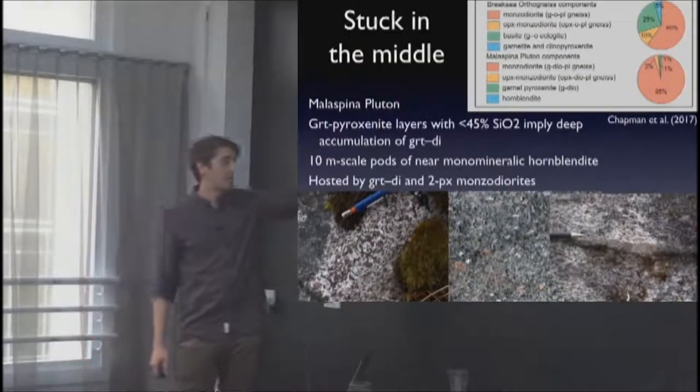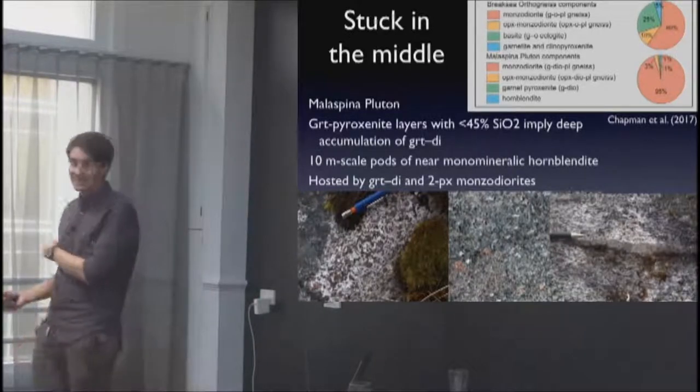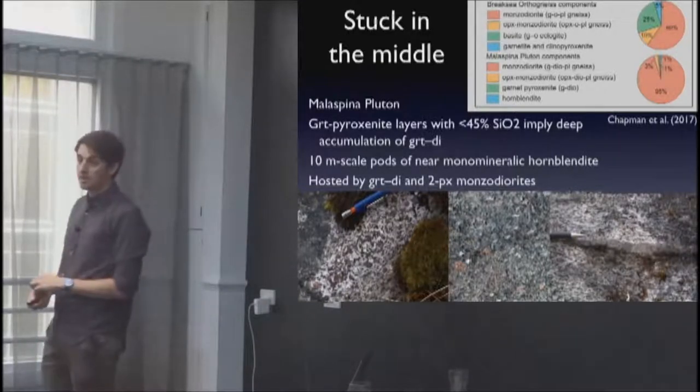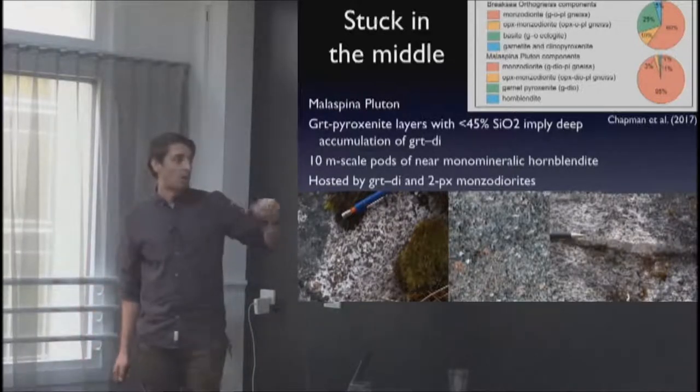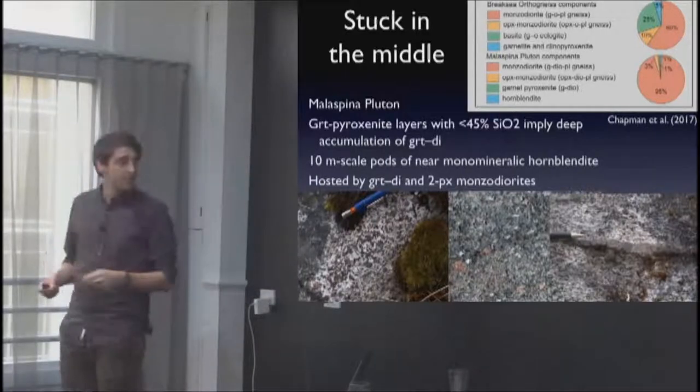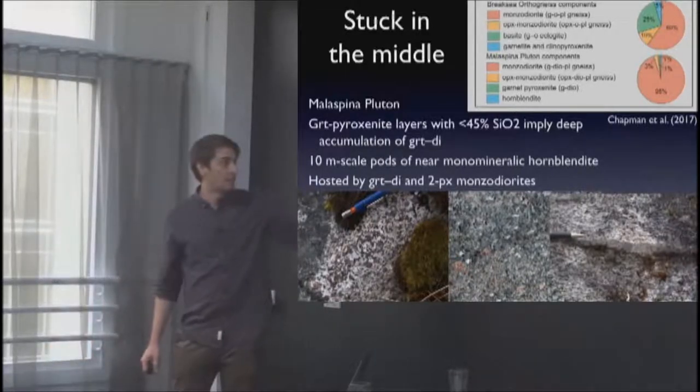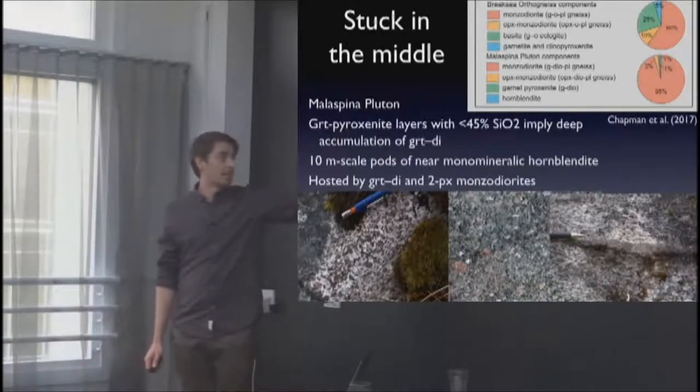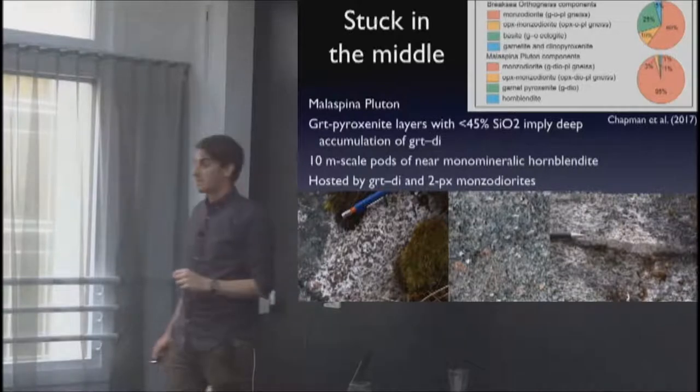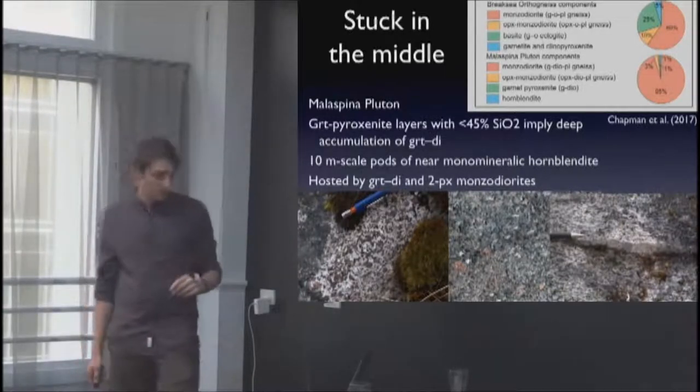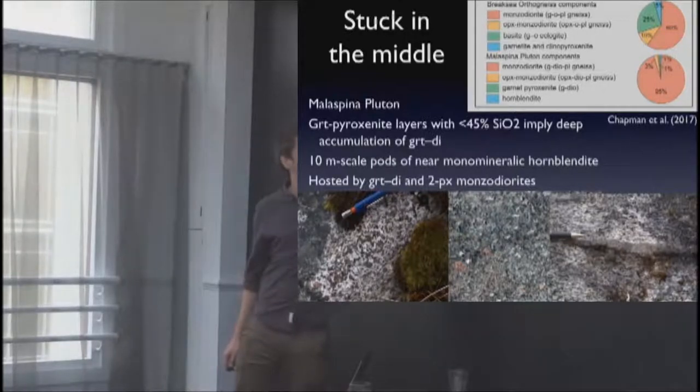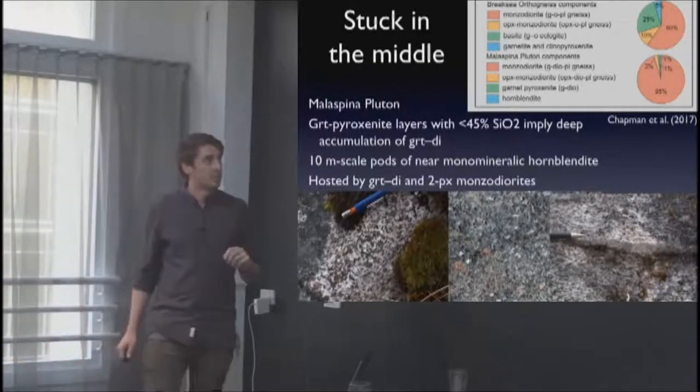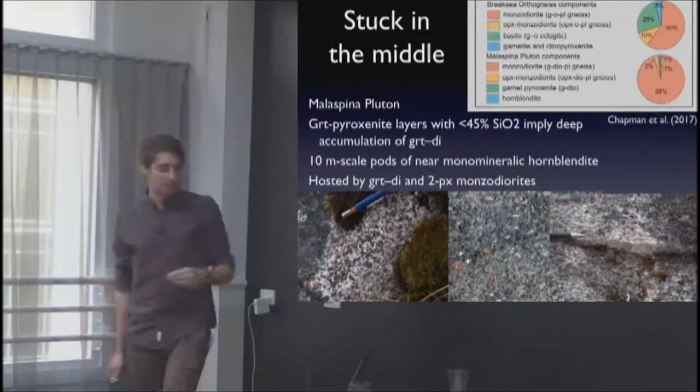At about 1.2 GPa we have rocks that are very similar in terms of texture except we predominantly have diopside as the stable clinopyroxene. We see smaller proportions of garnet-diopside material and mainly within a similar monzodiorite. We also find quite large pods of hornblendite and we see garnet-bearing diorites as well as 2-pyroxene-bearing diorites. This is an estimate of the proportions of the different units from my field area and it gives a rough indication that in the Break Sea orthogneiss there is much more cumulate material.